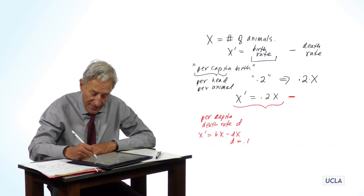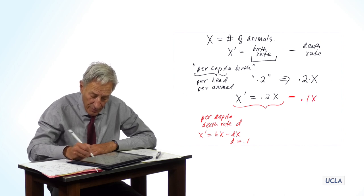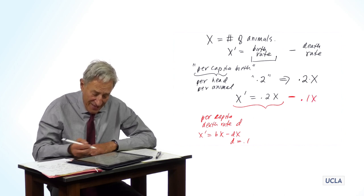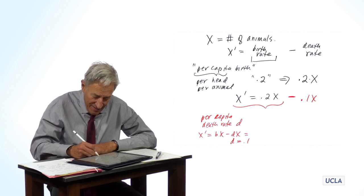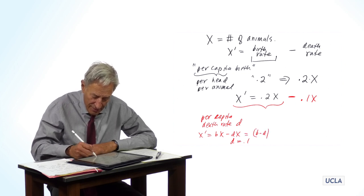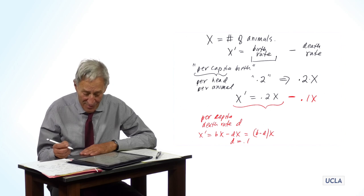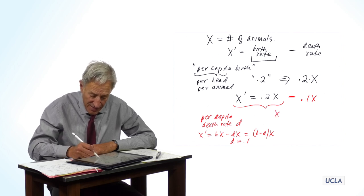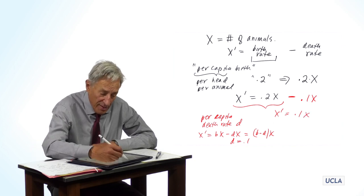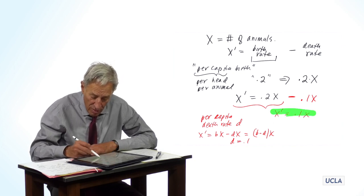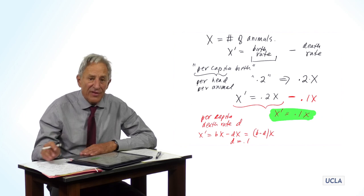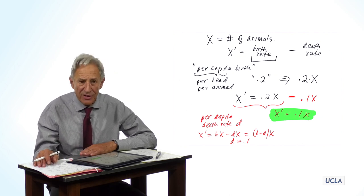So now, we have a definite model. Now, of course, since b and d are both constant, it's easy to pull them out and write b minus d times X. In this case, X prime equals 0.1X. And this is our net model of birth and death in the animal population.